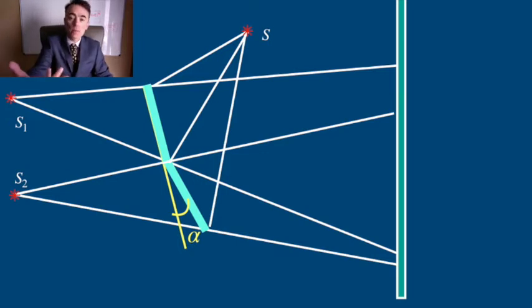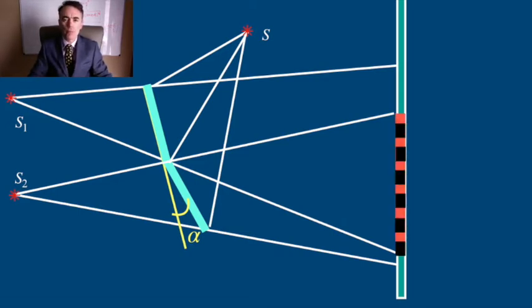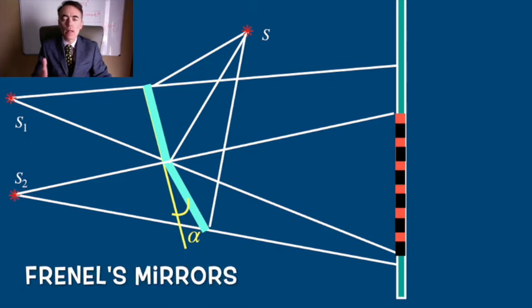As seen from the real space, each one of these images acts as a point source of light, and the light reflected off of each mirror will interact, forming an interference pattern just as that from the double slit. This we call the Fresnel mirrors.